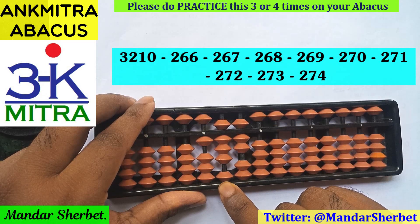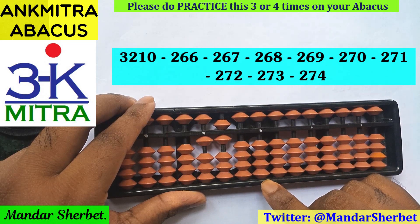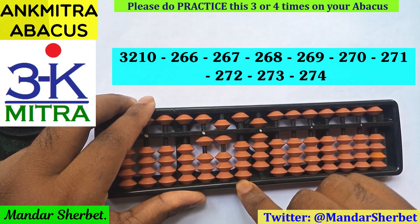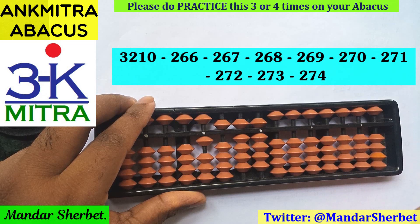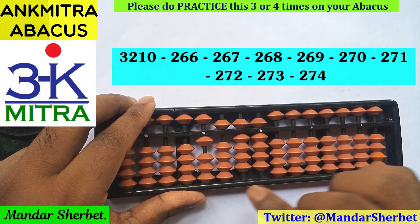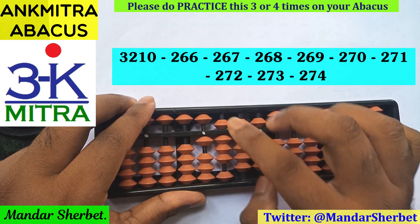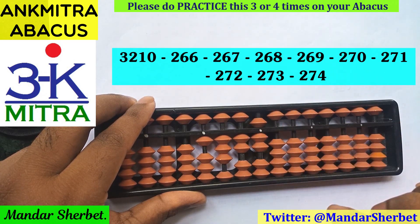Next number is minus 271. So 2 directly, 7 directly, and from 1 on this rod, subtraction of 1 using its big frame formula: plus 9, minus 10. Again for minus 1 on this rod it will be plus 9, minus 10. So 271 subtraction is done. Next number is minus 272. Minus 2 on this rod using its small frame formula: plus 3, minus 5. 7 on this rod directly and 2 on this rod directly. So minus 272 is done.